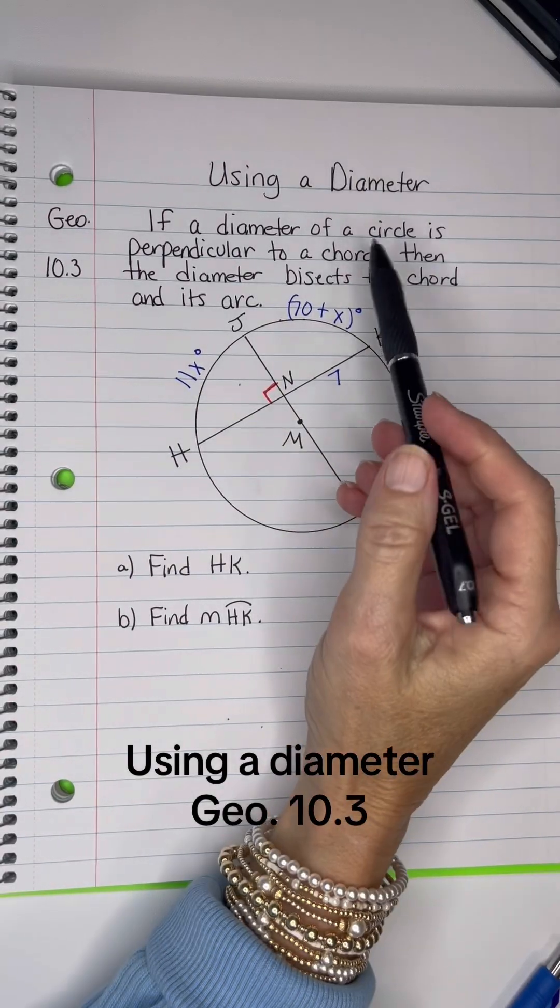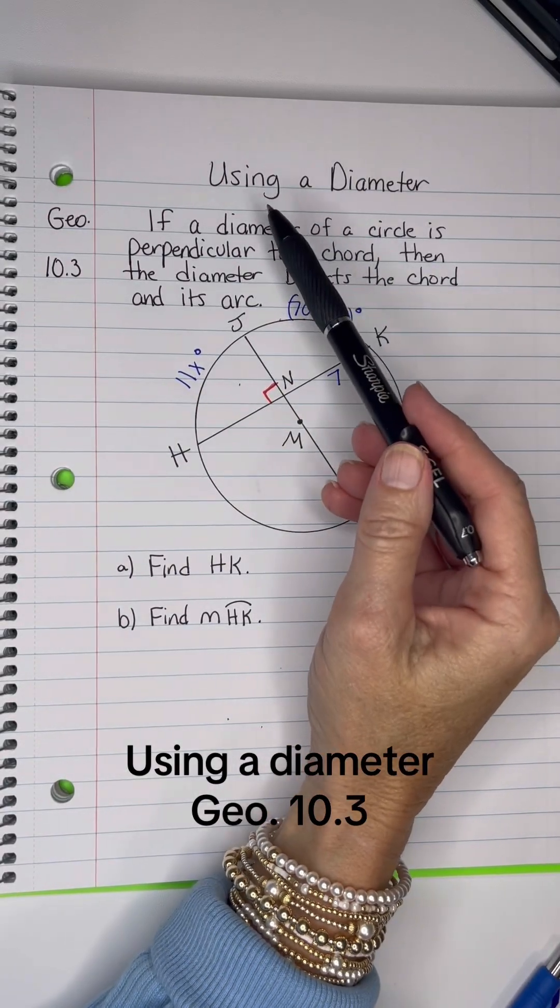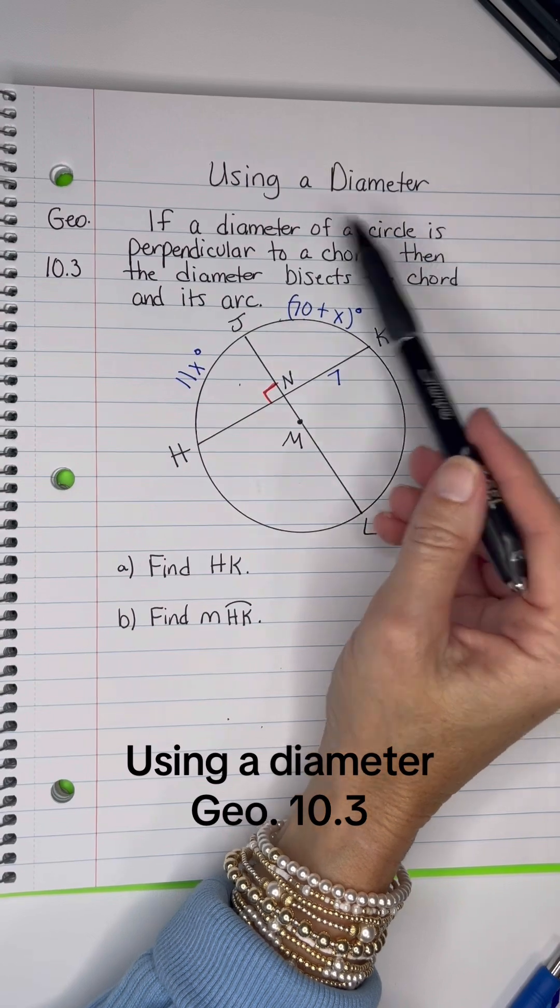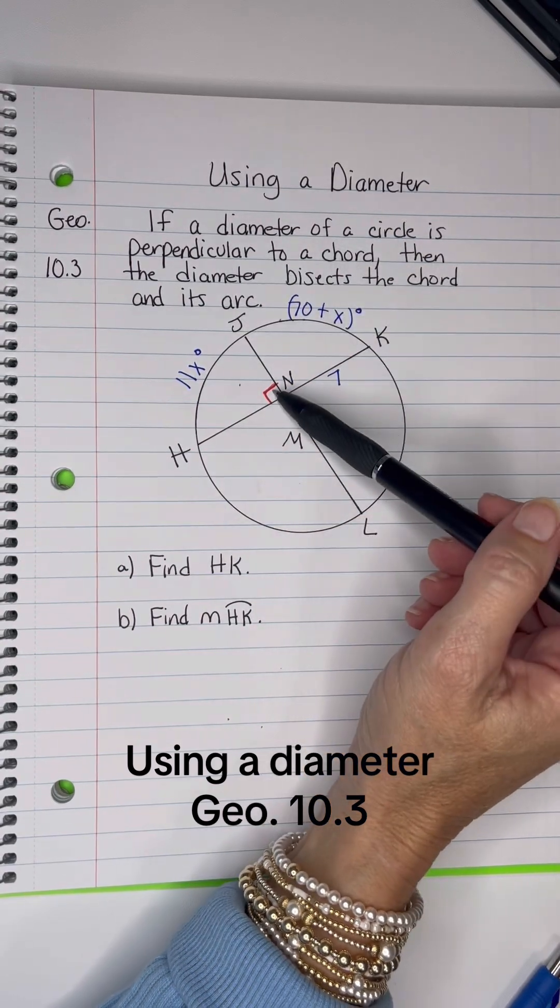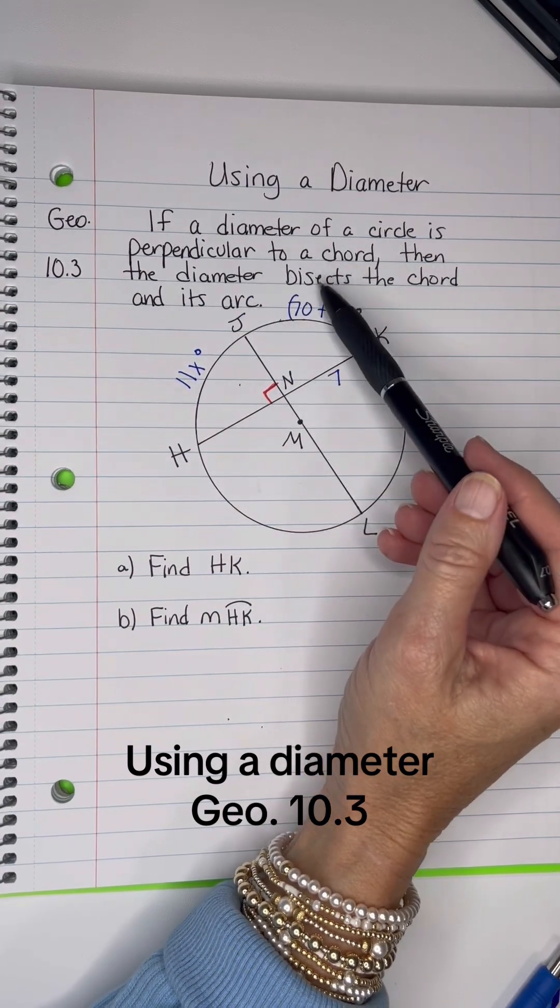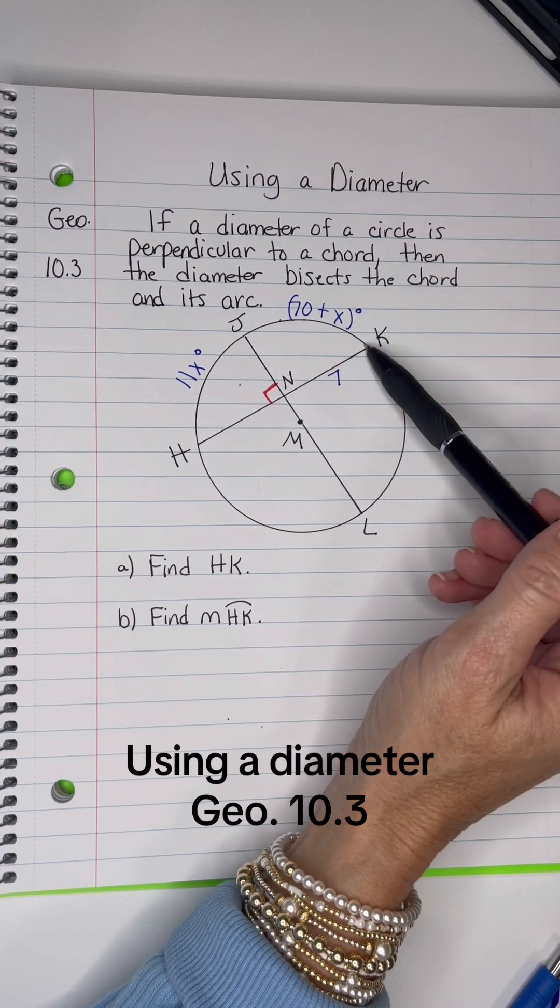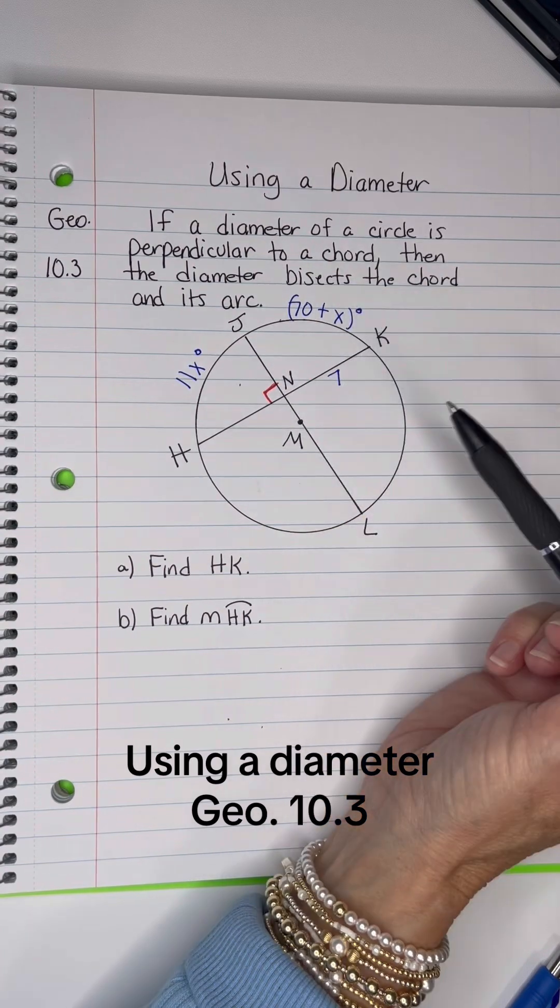This is the perpendicular chord bisector theorem. If a diameter of a circle is perpendicular to a chord, like right here, then the diameter bisects the chord and its arc.